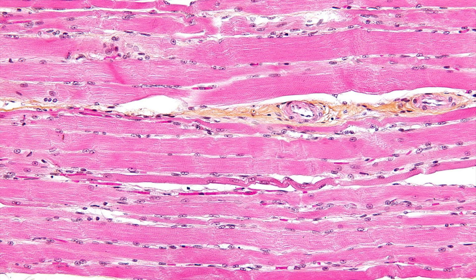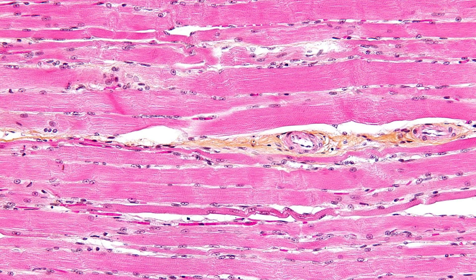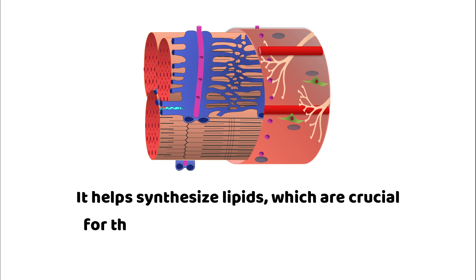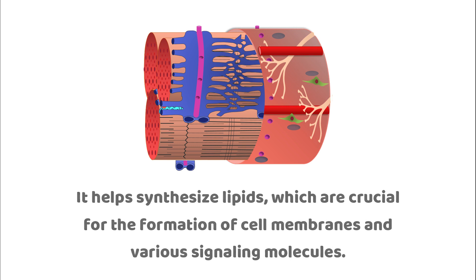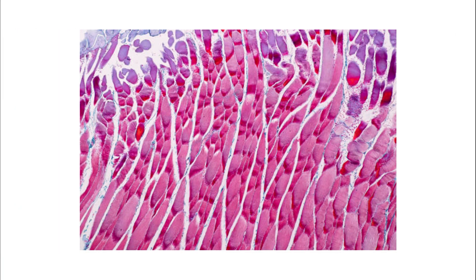Beyond calcium management, the smooth ER in muscle cells also participates in lipid metabolism. It helps synthesize lipids, which are crucial for the formation of cell membranes and various signaling molecules. This function ensures that muscle cells maintain their structural integrity and can adapt to the demands placed on them during contraction and relaxation.